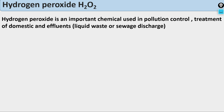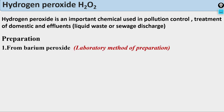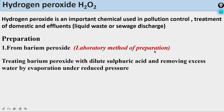Hydrogen peroxide is an important chemical used in pollution control — it has very important use in pollution control — and in treatment of domestic and industrial effluents. It is used to treat sewage waste as well. So this is a liquid of high importance. Its first preparation is from barium peroxide (BaO₂), which is the laboratory method of preparation: treating barium peroxide with dilute sulfuric acid and removing the water by evaporation under reduced pressure.